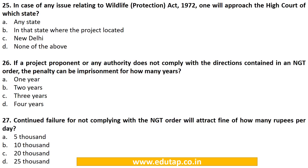MCQ 25: A PIL can be filed in that state where the project is located. The correct answer is B — in that state where the project is located. MCQ 26: If a project proponent or any authority does not comply with the directions contained in an NGT order, the penalty can be imprisonment for how many years? A. 1 year, B. 2 years, C. 3 years, D. 4 years. The correct answer is C. 3 years.